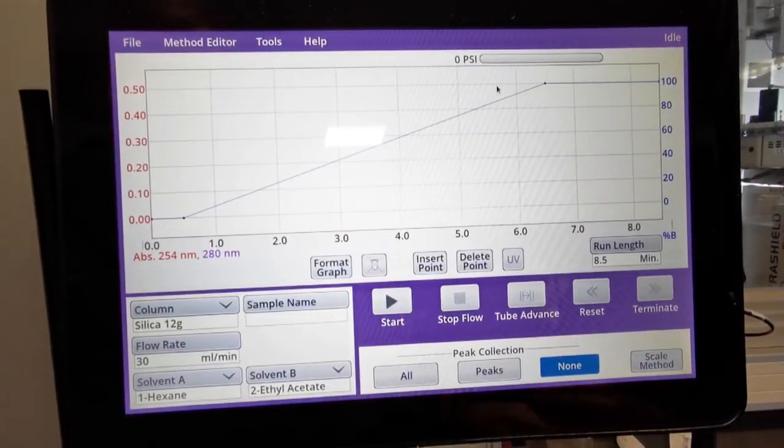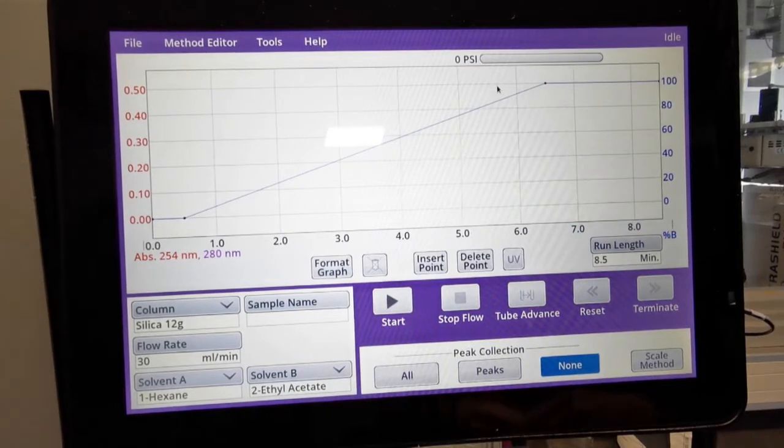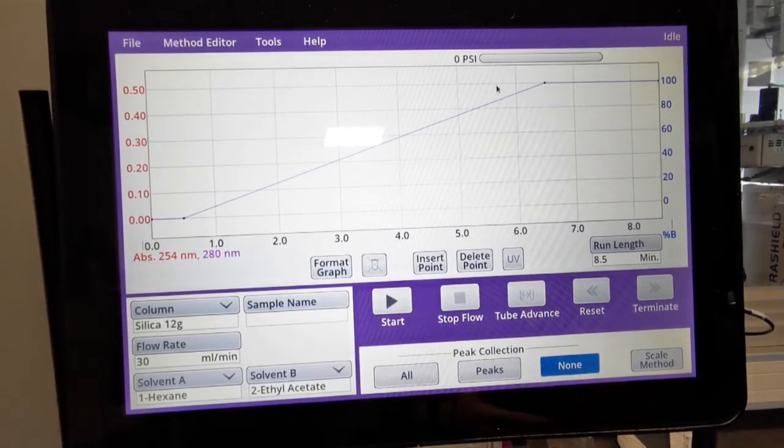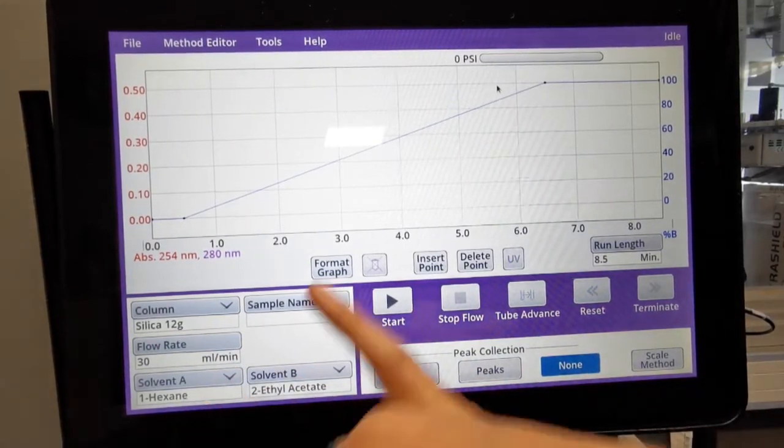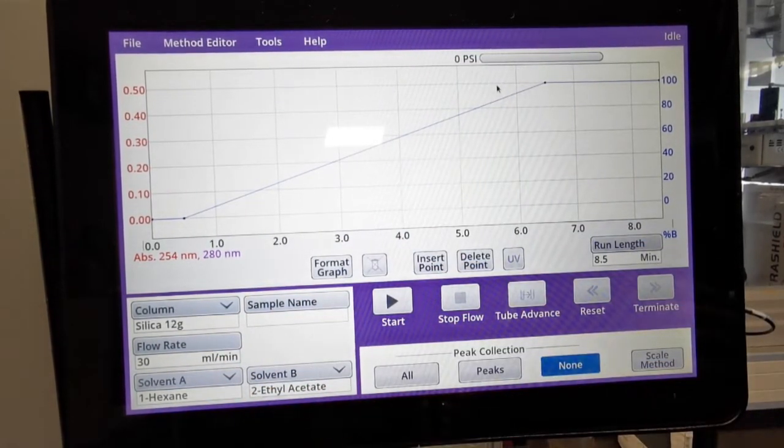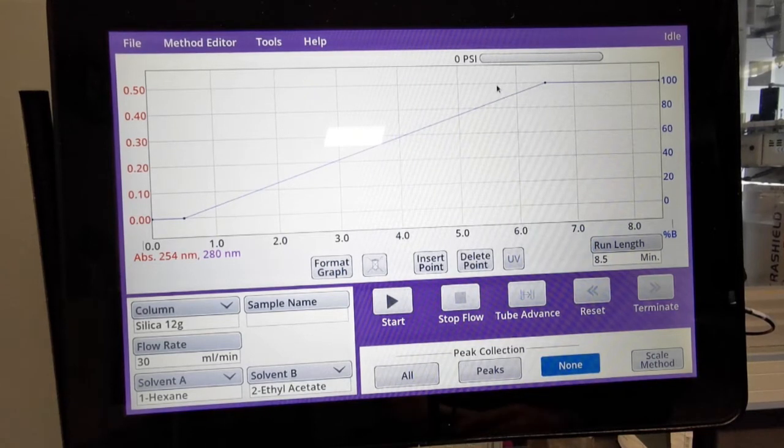So here we are on the front screen of our next-gen 300 plus. As you can see, we've got a normal phase silica column and it's set up with a default gradient using hexane ethyl acetate.